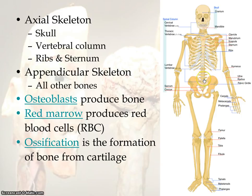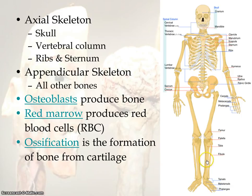Your vertebrae make up your spinal column. Then you have the pelvis, your hips. The longest bone in the body is going to be the femur — your thigh bone. Your kneecap bone is called the patella. Then you have two bones in your lower leg: the larger is the tibia, on the side of your big toe; and the smaller bone is the fibula. Those are the main bones you want to be familiar with.